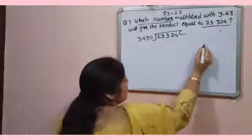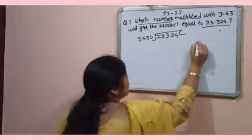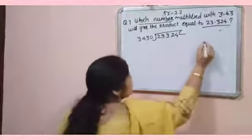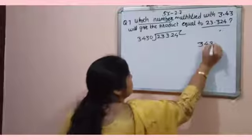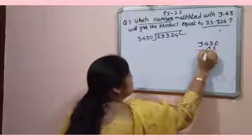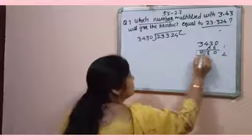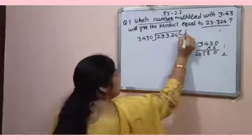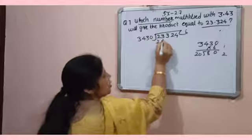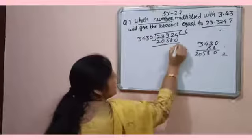So first it will be divided by 7 or by 6. So let's check with 6. Yes, it will be divided by 6. 20,580.